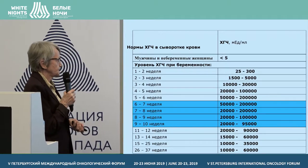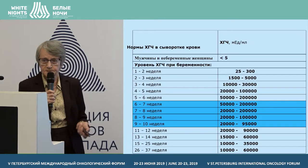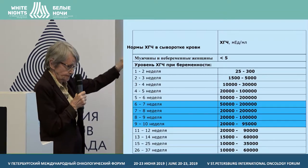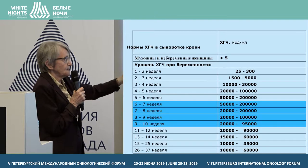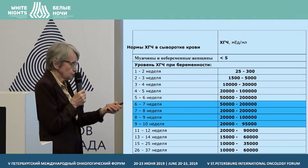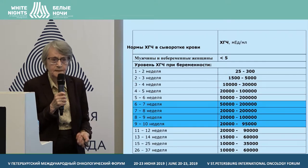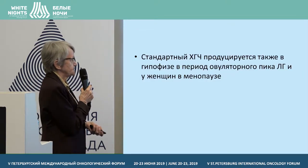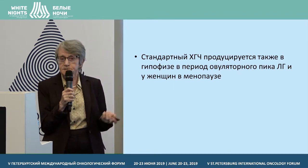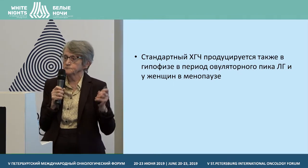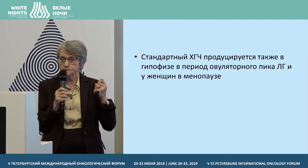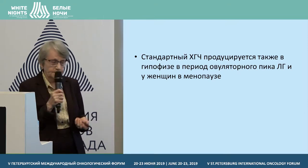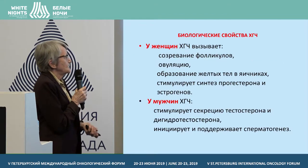These are data on HCG levels in pregnant women. It becomes higher — upregulated starting from the very first week of pregnancy up to the 12th week. Starting from week 12, in a normally developing pregnancy, the level of chorionic gonadotropin goes down. Apart from pregnancy, HCG in some proportion can also be detected in the pituitary and in menopausal women.